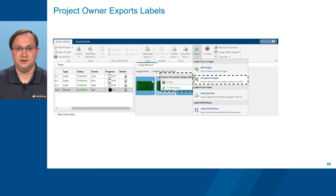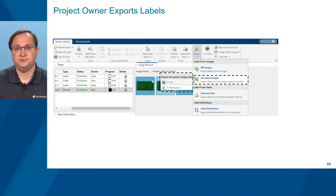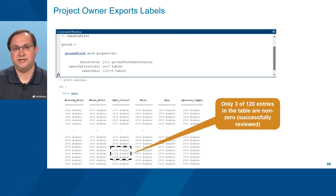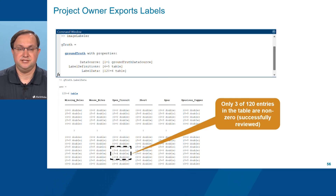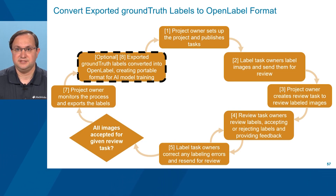When exporting using the Export icon, only the accepted images can be chosen, and they can be exported to either a file or a workspace — a workspace is chosen here. It is also possible to export labels to the cloud. The act of exporting labels to a workspace results in a gTruth object corresponding to the labeled data. Only three of 120 entries are non-zero since only three images were labeled during this presentation. To enable label portability for training AI models, MATLAB provides a ground truth to OpenLabel format conversion function that turns a ground truth object into a .json file.